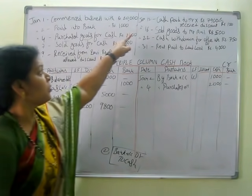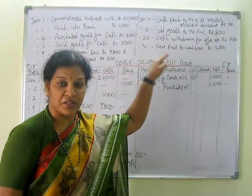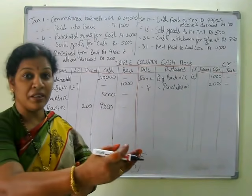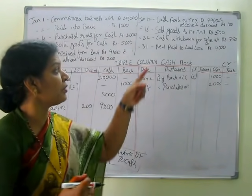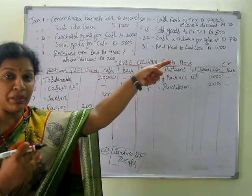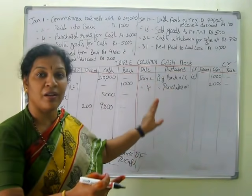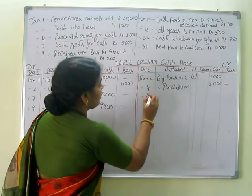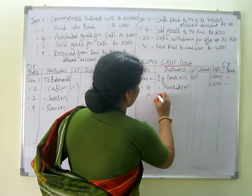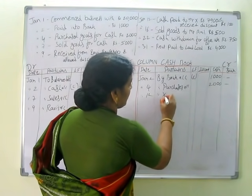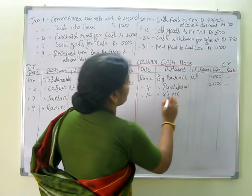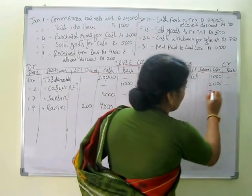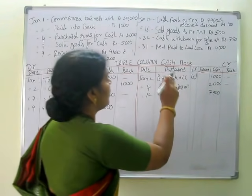Next, January 12th: cash paid to Mr. X and received discount. When we are paying cash to Mr. X, he allows us a discount of 100 rupees. Payment — all payments will be on the credit side. January 12th, by X account. How much are we paying? 7,900 in the cash column. He allowed us discount of 100 rupees — write 100 in the discount column on the credit side.